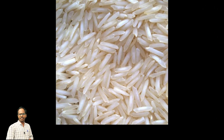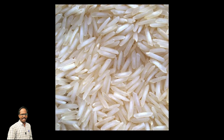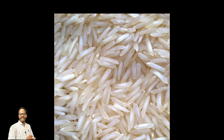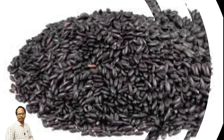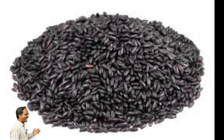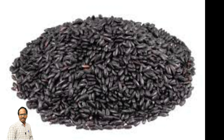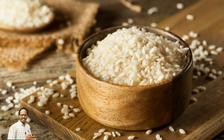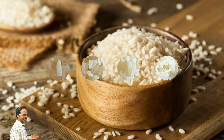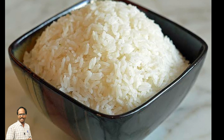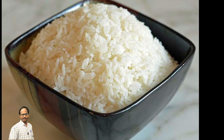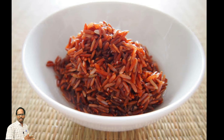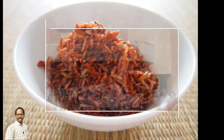Name some varieties of rice you know. Basmati rice is a variety of long, slender-grained aromatic rice, traditionally from the Indian subcontinent. Black rice is also known as forbidden rice in ancient China. Arborio rice is an Italian short-grain rice. Jasmine rice is a long-grain variety of fragrant rice. Red cargo rice is a type of non-glutinous long-grain rice; it is unpolished.